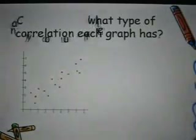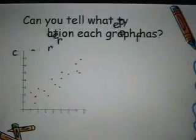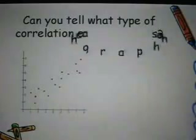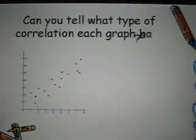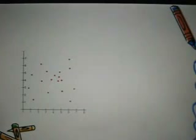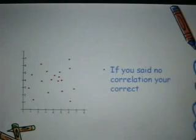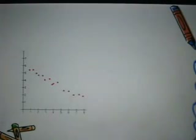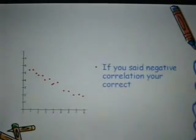Can you tell what type of correlation each graph has? If you said positive, you are correct. If you said no correlation, you are correct. If you said negative correlation, you are correct.